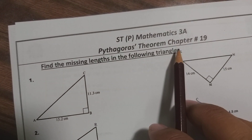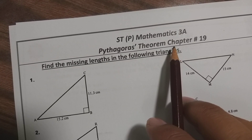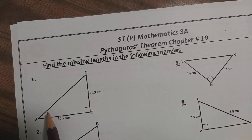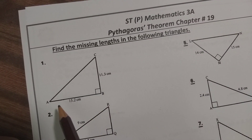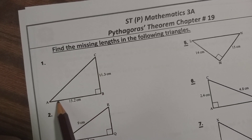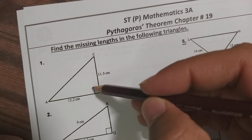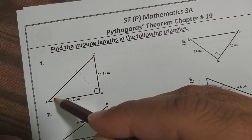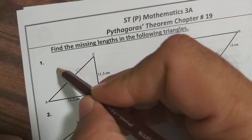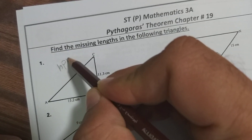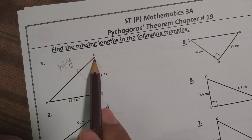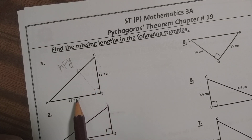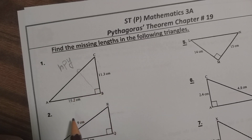Today we will discuss Pythagoras theorem. Pythagoras theorem is used to find the missing length of a right angle triangle. Here we observe this is a right angle triangle. In front of the right angle, the longer side is called the hypotenuse. The rest of the short sides, from A to B or B to C, are either called length 1, length 2, or they are the legs of the right angle triangle.